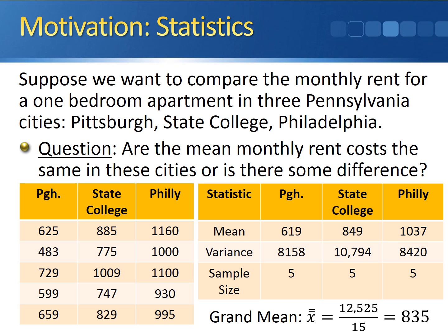The table summarizes all of the statistics. The mean rent cost in Pittsburgh is $619. State College averages $849. And Philadelphia averaged $1,037. The sample variance in Pittsburgh is $8,158. State College is $10,794. And the sample variance in Philadelphia is $8,420. Each city had five apartments sampled, so the sample size is five for each of the three groups. Adding up all 15 observations gives us $12,525. Since we have 15 total observations, we divide $12,525 by 15 to get a grand mean of $835.